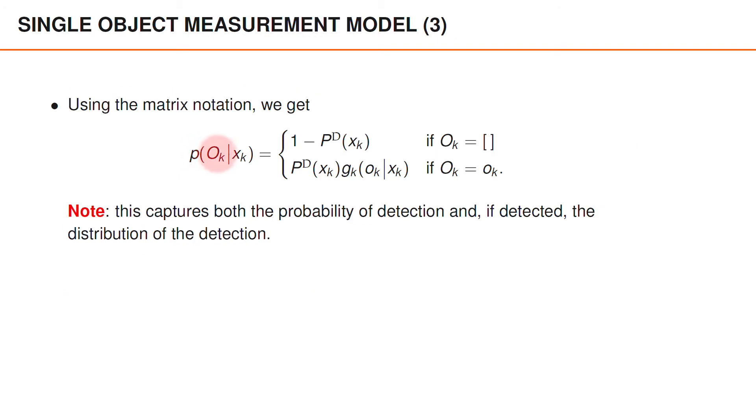We can now describe the distribution of the object measurement matrix, given the state x_k. Evaluating this distribution when o_k does not contain any measurements is the same as asking what the probability is that the object is undetected. And this is 1 minus p_d of x_k. If we instead evaluate the distribution when the measurement matrix, capital O_k, is the vector lowercase o_k, we get the probability that the object is detected, p_d of x_k, times the distribution of the measurement vector o_k, given x_k. Please note that the measurement model described here elegantly captures both the probability of detection and, if detected, the distribution of the measurement, where the factors 1 minus p_d and p_d account for the probability that the matrix is empty or non-empty. Whereas the factor g_k of o_k given x_k roughly speaking accounts for the probability of the specific measurement vector given that the object is detected.